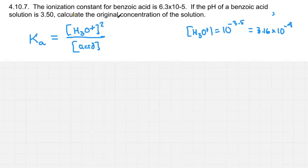and they want the original concentration of the solution, so we're trying to solve for the acid concentration down here. We have 6.3 times 10 to the minus 5 for our Ka equals 3.16 times 10 to the minus 4 squared over X,